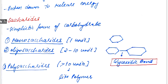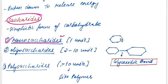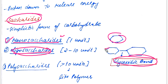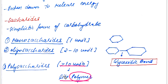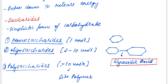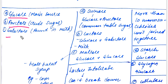Carbohydrates are made of saccharides. If it is one saccharide, we call it a monosaccharide — one unit. If it is two to ten units, we call it an oligosaccharide. If it is more than ten units, it is a polysaccharide. These are all connected by glycosidic bonds. Examples of monosaccharides are glucose, fructose, and galactose. The main source of energy is glucose.